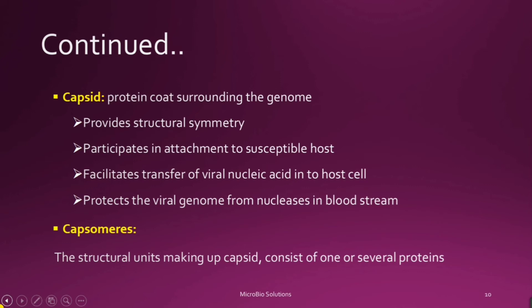The capsid also participates in the attachment of the virus to the susceptible host, thereby facilitating the transfer of viral nucleic acid into the host cell so that infection can be initiated. Additionally, the capsid protects the viral nucleic acid from nucleases in the bloodstream. Nucleases are enzymes commonly found in the bloodstream which can degrade nucleic acid, so the capsid covering gives protection to the genetic material from these nucleases.